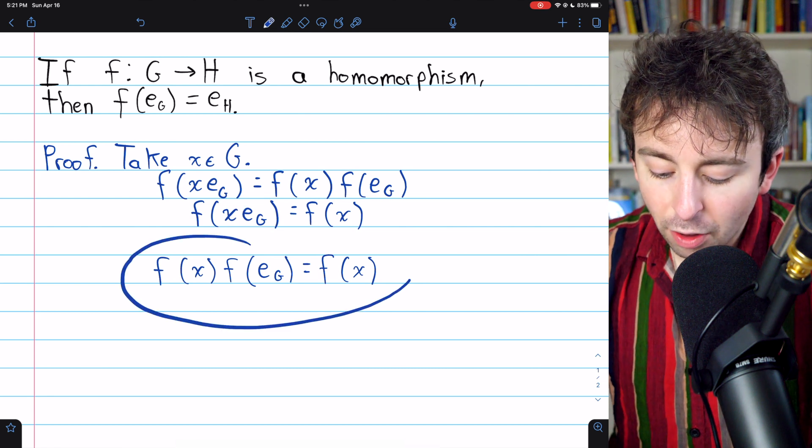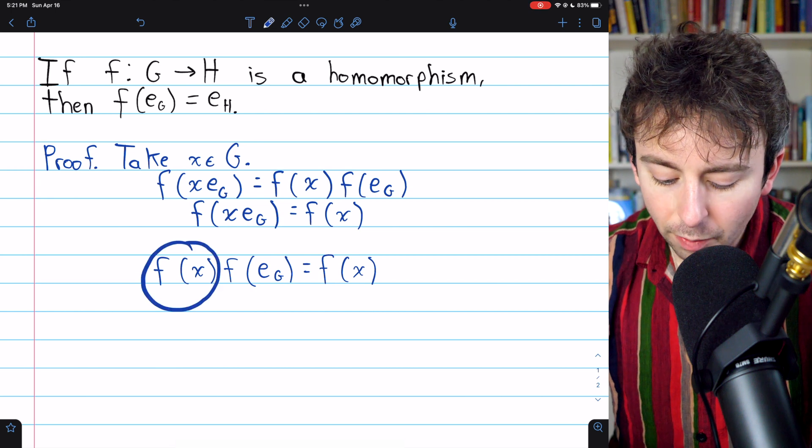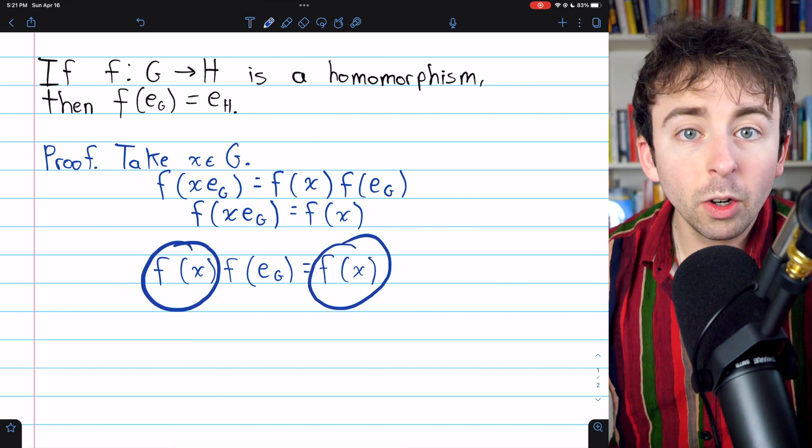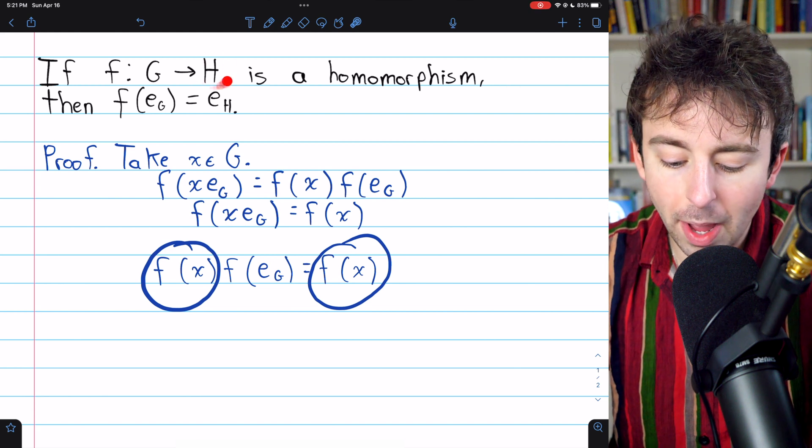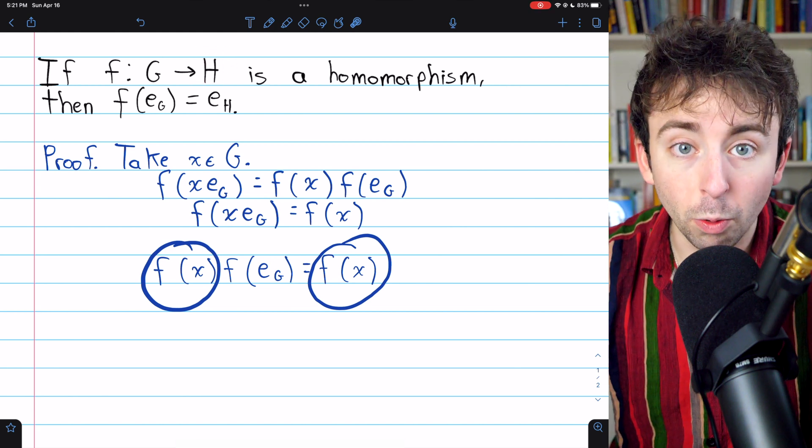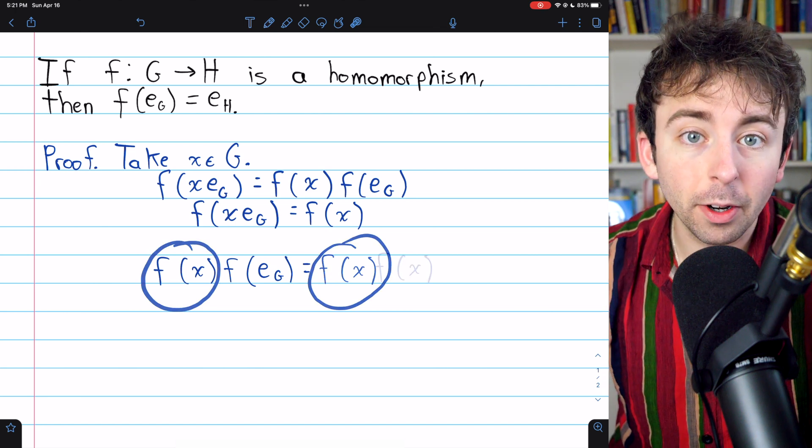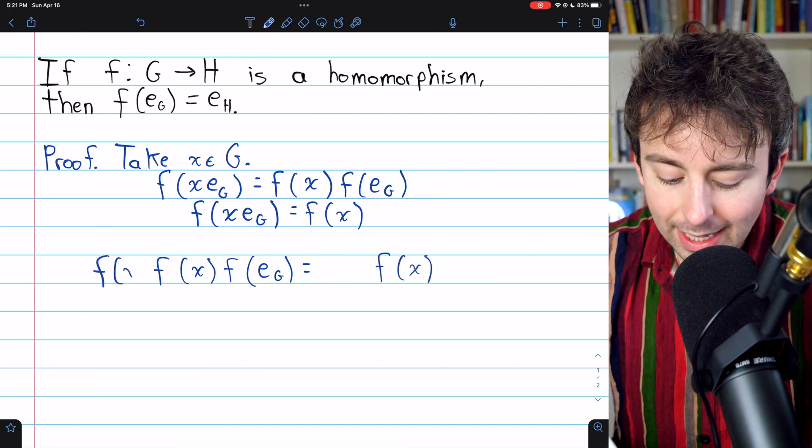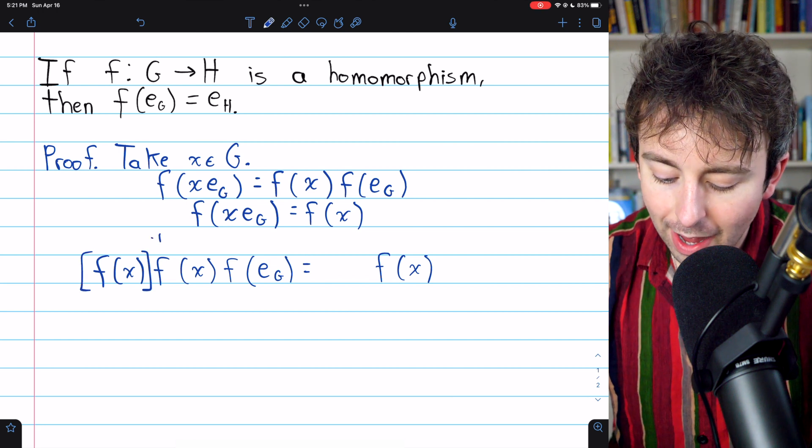Now we get this third equation, and we'll multiply both sides by the inverse of f of x. We know that exists because f of x is an element of the codomain. The codomain is a group H, so certainly this element of the codomain has an inverse. So we'll multiply on the left. Both sides of the equation get this factor of f of x inverse.